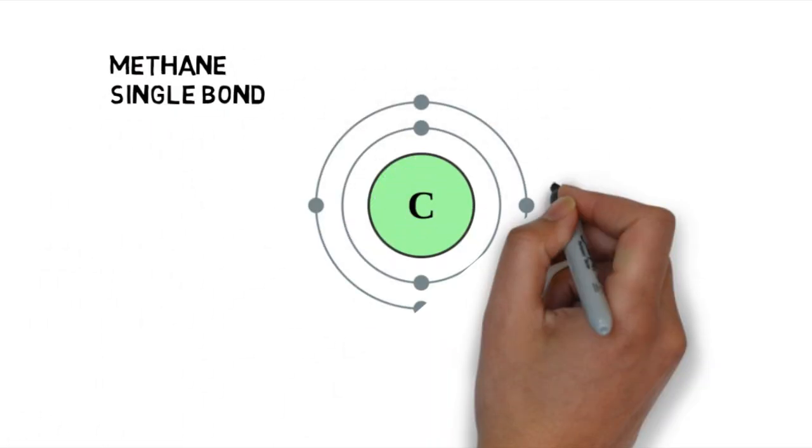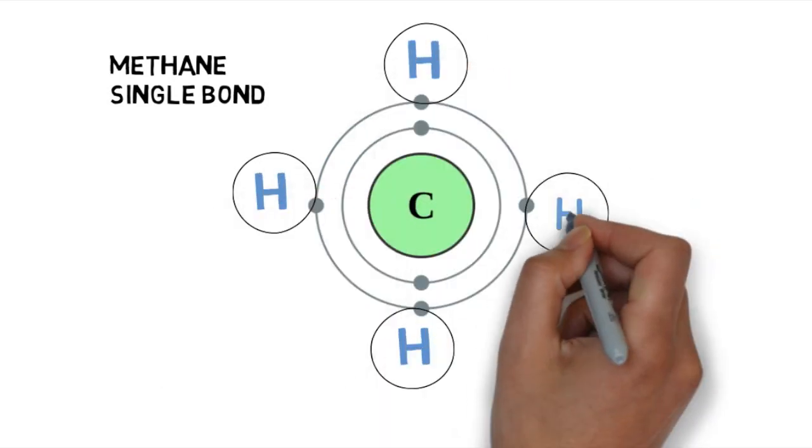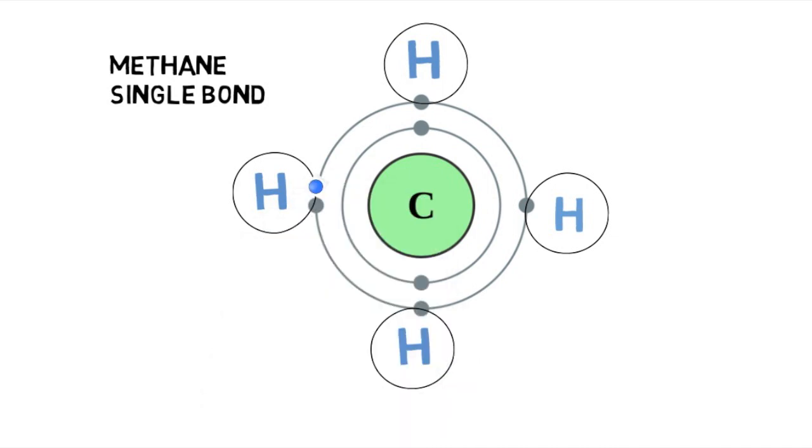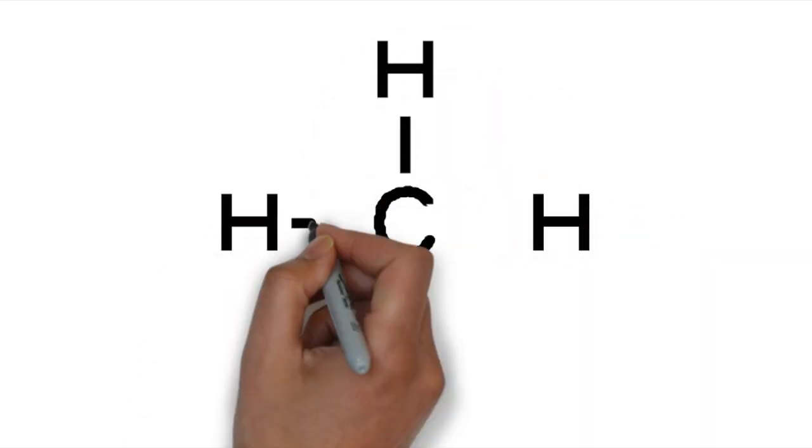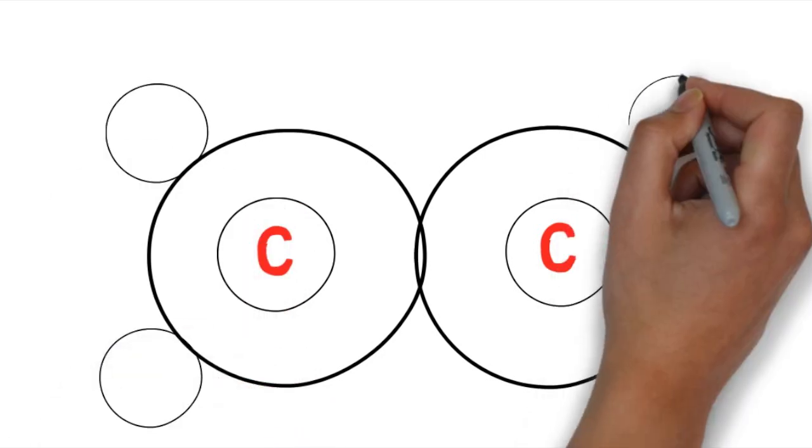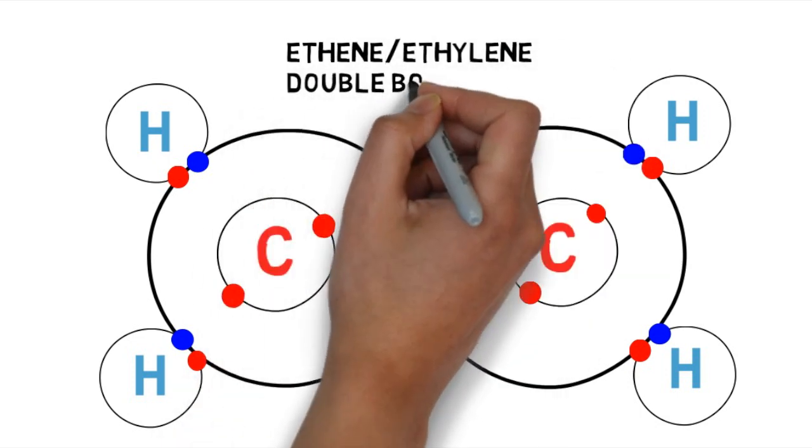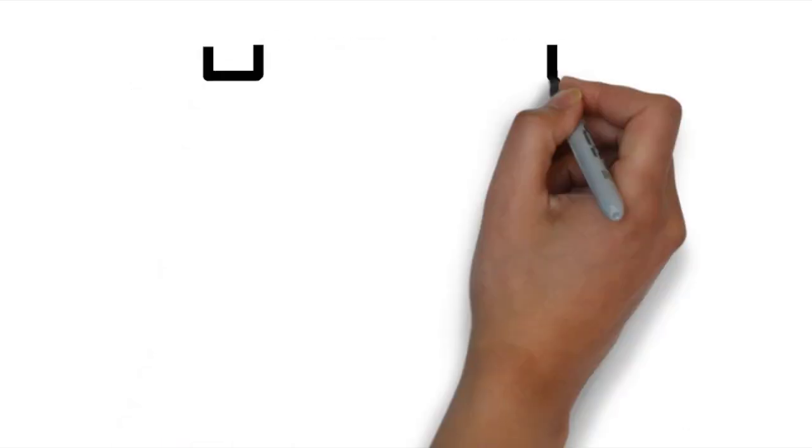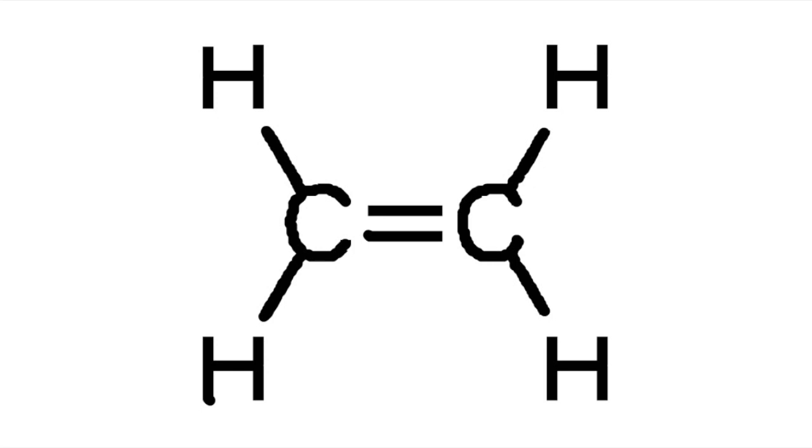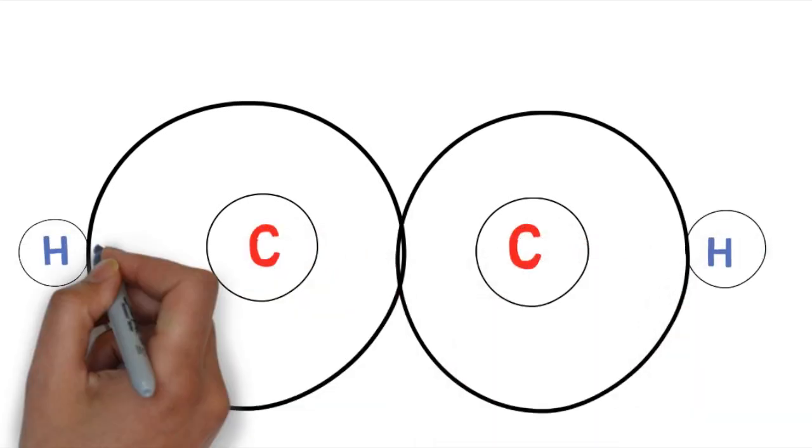Carbon forms covalent bonds by sharing electrons. The electrons spend time in the outer shell of either carbon or hydrogen. Here, this organic compound is methane. Here is the structural formula for methane with its single bond. In this model of ethylene or ethene, two electrons of one carbon atom are shared with two electrons from another carbon atom. Here is the structural formula for ethane or ethylene showing the double bond. Two carbon atoms here share six electrons to make acetylene. This is the structural formula for acetylene, which is the simplest triple bond.